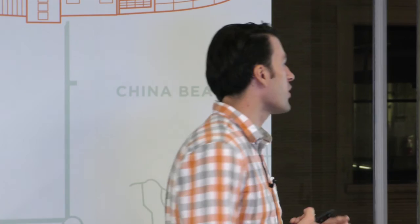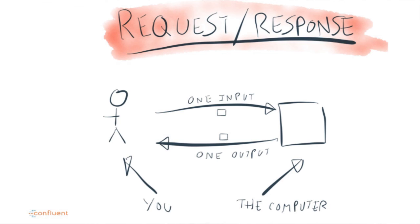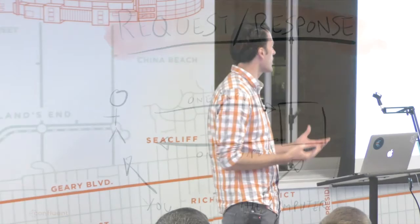The main ways people write programs are request-response, batch, and stream processing — which is our hero for the next 30 minutes. I think stream processing is a sort of alternative paradigm to the other two. It's more general.